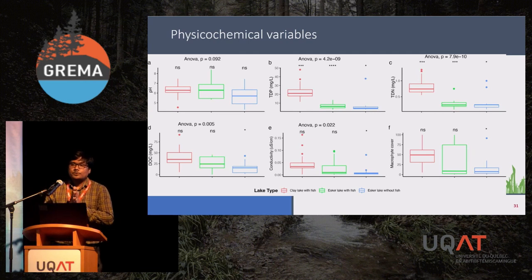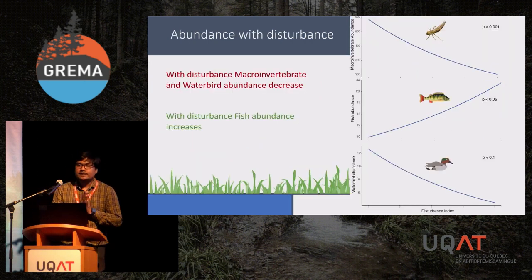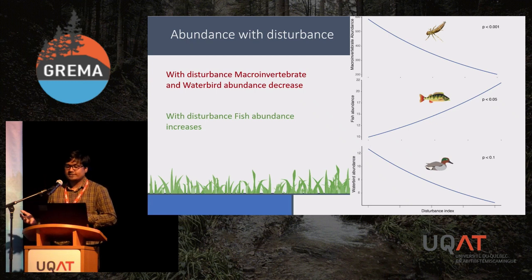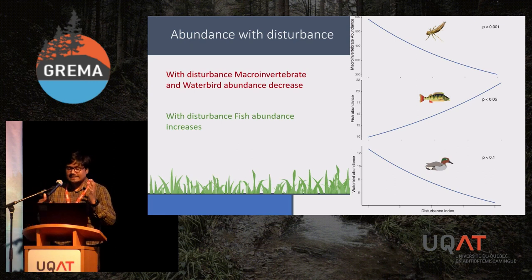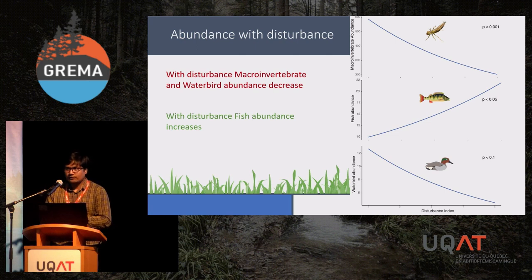We found that nutrient concentration was significantly lower in ESCR lakes that didn't have any fish, and dissolved organic carbon was also significantly low in fishless ESCR lakes. Looking at abundance versus disturbance, we found that with increasing disturbance, macroinvertebrate and waterbird abundance decreases; however, with disturbance, fish abundance increases. We found an effect of disturbance index and elevation over the biological communities.